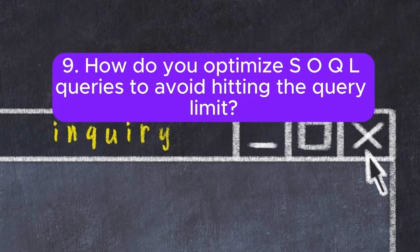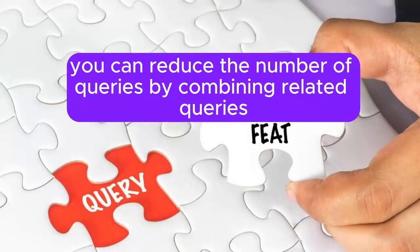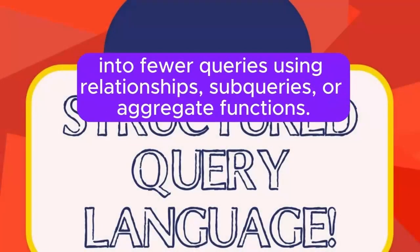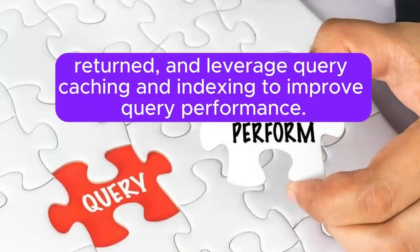Question 9: How do you optimize SOQL queries to avoid hitting the query limit? Answer: To optimize SOQL queries and avoid hitting the query limit, you can reduce the number of queries by combining related queries into fewer queries using relationships, subqueries, or aggregate functions. You can also use selective filtering criteria, limit the number of records returned, and leverage query caching and indexing to improve query performance.